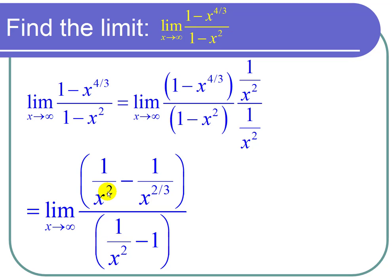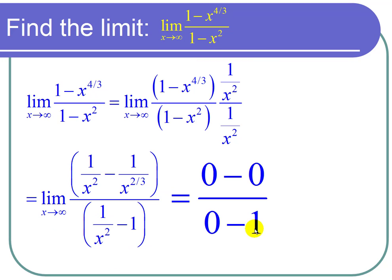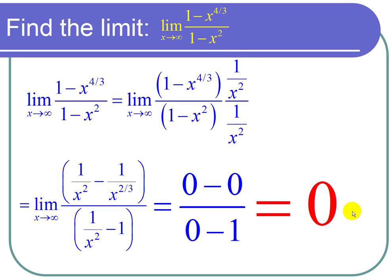So we get 0 minus 0 divided by 0 minus 1. And I can work that out. I get 0 divided by negative 1. And 0 divided by any non-zero number is just 0. And there's my limit. And I'm done with the problem.